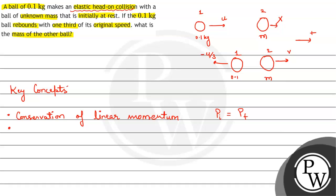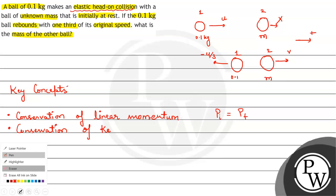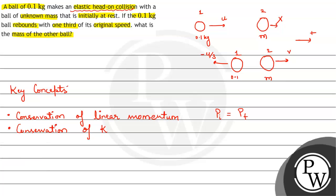In conservation of kinetic energy, the net kinetic energy of the system initially, ki, is equal to the net kinetic energy of the system finally, kf. Taking these two concepts into consideration, let us jump right into the solution.